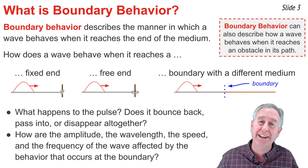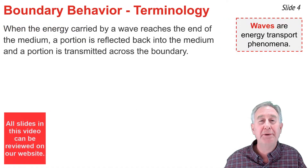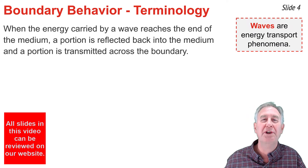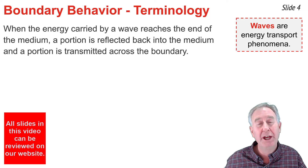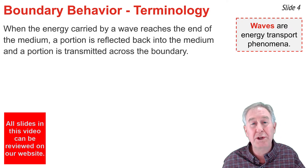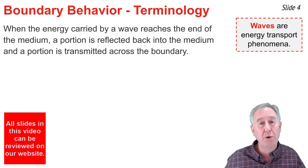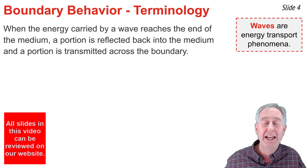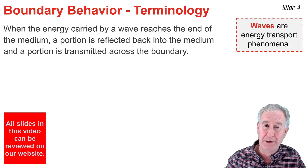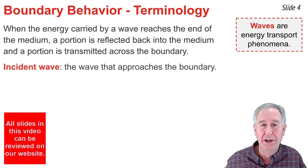the amplitude, and the speed affected by the behavior that occurs at the boundary? Waves are commonly referred to as energy transport phenomena because they transport energy from one location to another without actually displacing physical matter. When the energy carried by a wave reaches the end of a medium, there are two things you can expect to happen: a portion of that energy is reflected off the boundary and remains in the original material, and a portion of that energy is transmitted across the boundary.